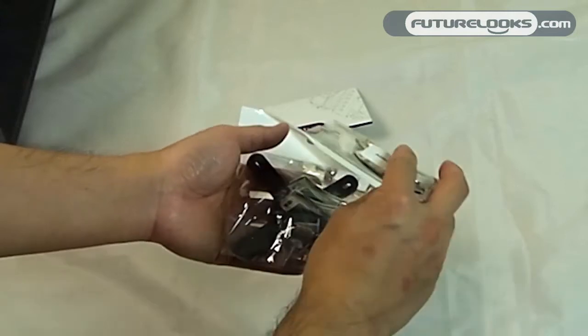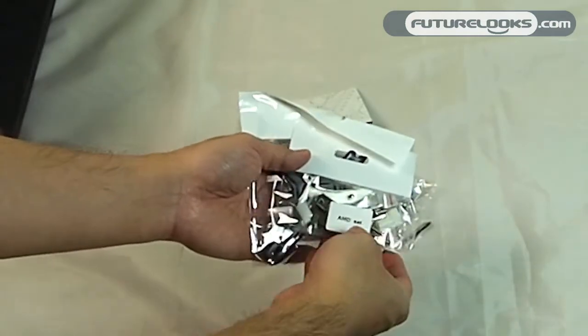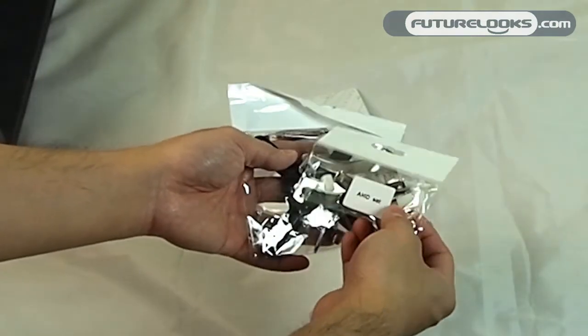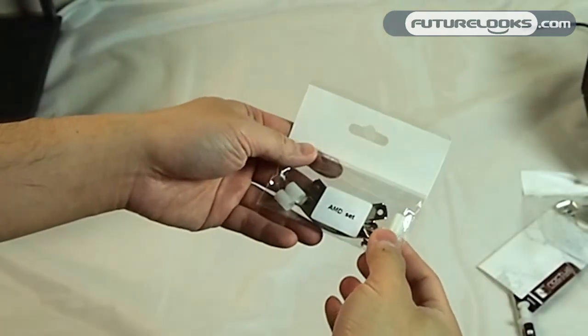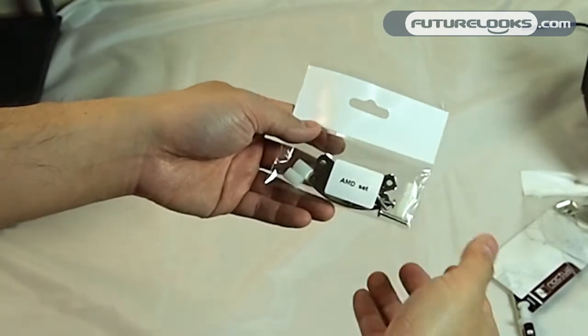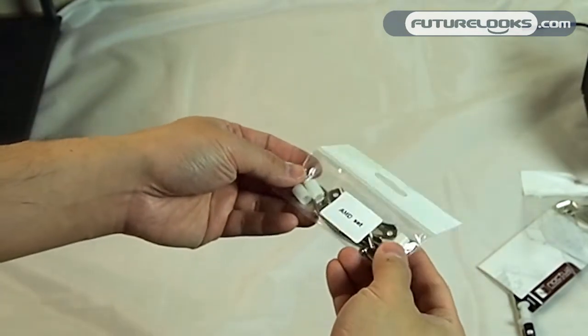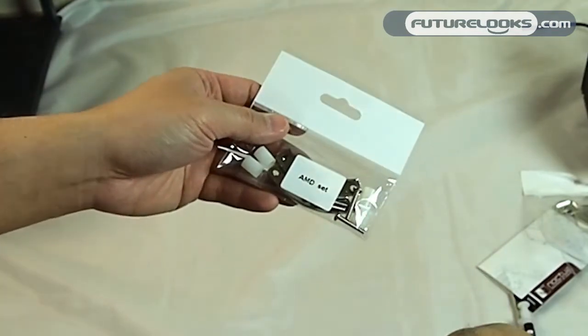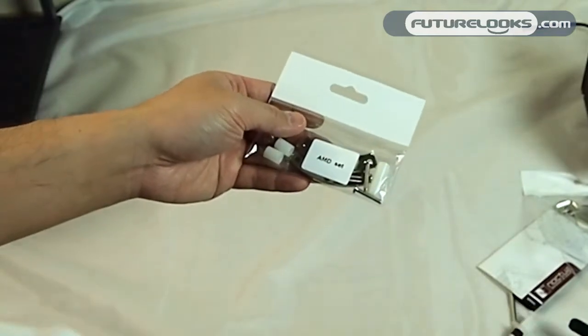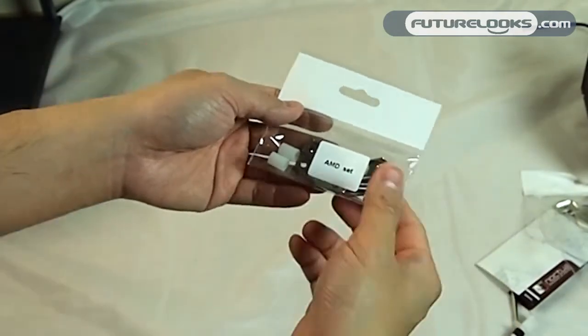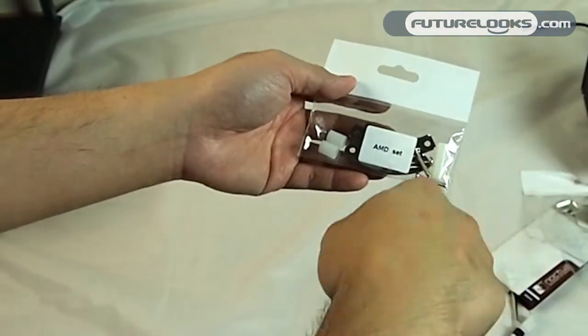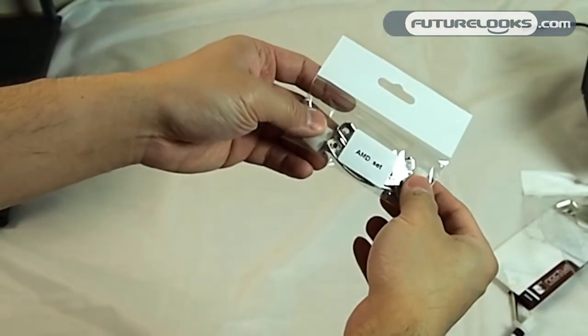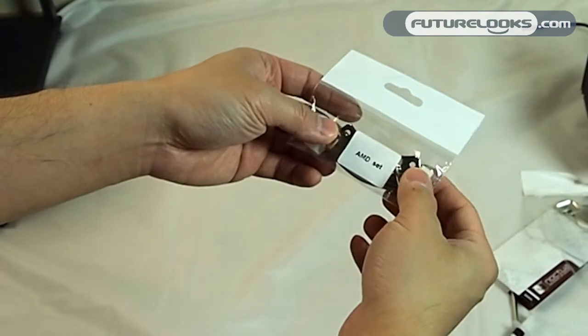On the AMD side, you'll be supporting the AM2, AM2+, to AM3 CPU sockets. For the AMD socket users, you don't actually have to use the secure firm base plate, which is this guy right here. All you need to do is actually just undo the regular plastic socket mount that's already fitted to your motherboard and reuse the base plate that's already in place.